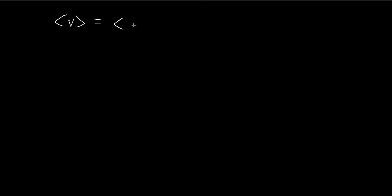In this example, we're going to try to find the expected value of the potential. For the case of a harmonic oscillator, we know that the potential is given by this formula, and so we apply it directly into the formula.